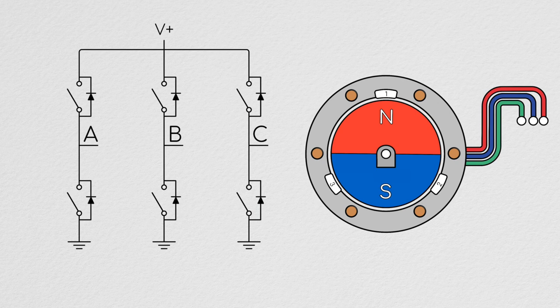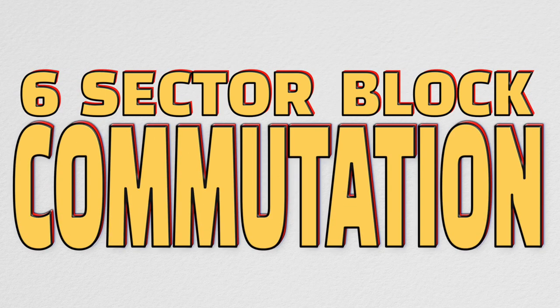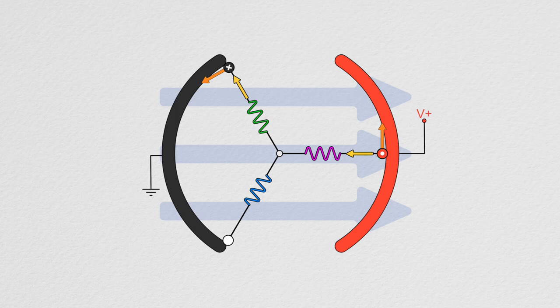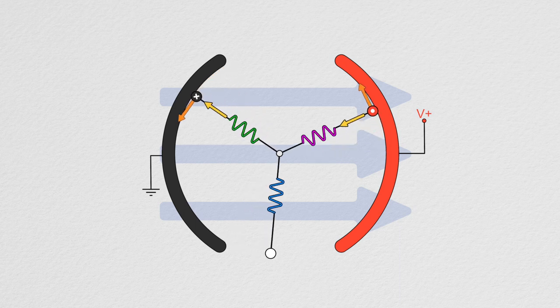But for now, we're just going to start simple with what's called six-sector block commutation. Here, just like with brushed commutation, only one of the motor's nodes is connected to ground, and one is connected to high at a time.